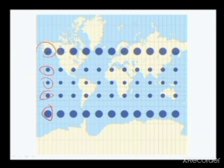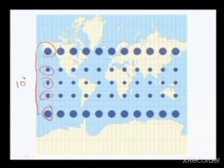If you see these circles here, they are of the same size in a cylindrical projection. Because when you measure your distance from a Mercator chart, assuming the diameter of this small circle is 10 degrees, this one is also 10 degrees, and that is also 10 degrees.